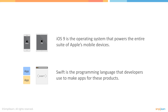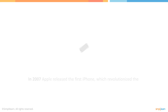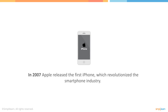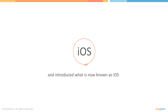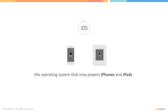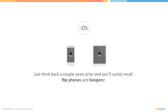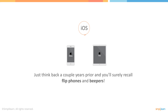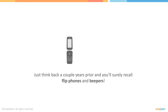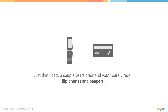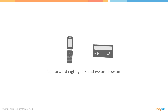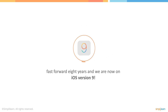For a true understanding of this, a little background is required. In 2007, Apple released the first iPhone, which revolutionized the smartphone industry and introduced what's now known as iOS, the operating system that powers iPhones and iPads. Just think back a couple years prior and you'll surely recall flip phones and beepers. Fast forward eight years and we're now on iOS version 9.